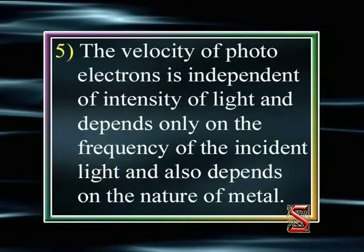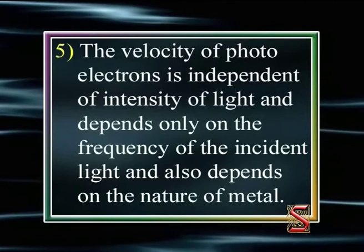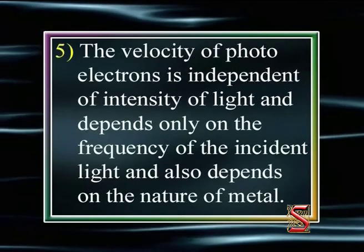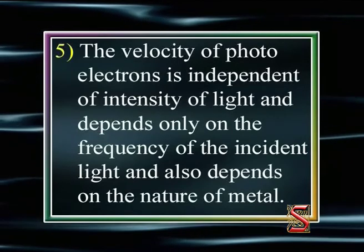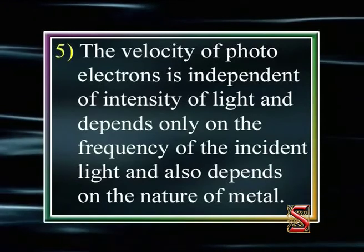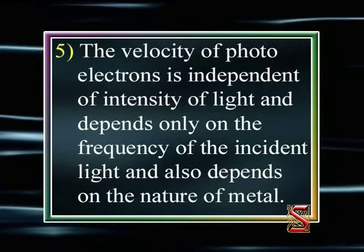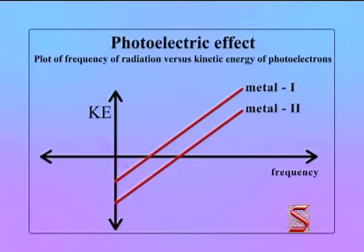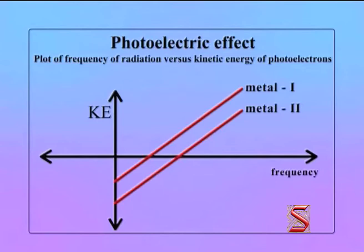The fifth law states that the velocity of photoelectrons is independent of the intensity of light incident and depends only on the frequency of the incident light and the nature of the metal. The kinetic energy of photoelectrons changes linearly with the frequency of the incident light, as shown in the graphs you are viewing. Thus, the energy distribution of photoelectrons is independent of the intensity of light.